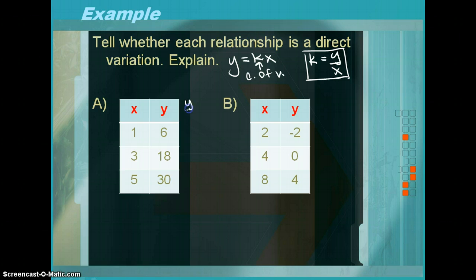So again, we're going to do y divided by x. So 6 divided by 1 is 6. 18 divided by 3 is 6. And 30 divided by 5 is 6. Because all of these are equal to 6, this is a direct variation, and the equation is y is equal to 6x. So for every x that you plug in, you're going to multiply it by 6 to produce the y.